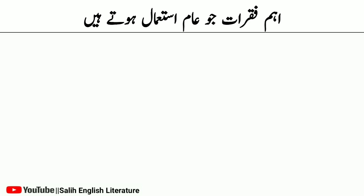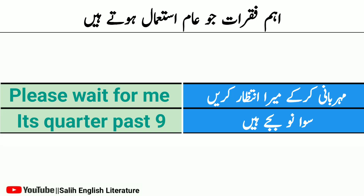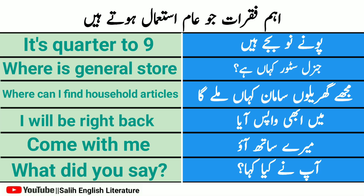Some English sentences which are commonly used — jo aam istemal hone wale chand fiqre hain, wo study karte hain. Sabse pehla hai: mehrbani karke mera intezaar karein — please wait for me. Sawa nau baje hain — it's quarter past nine. Pauune nau baje hain — it's quarter to nine. Jahan ghar ka saman milta hai — where can I find household articles? Main abhi wapas aaya — I will be right back.